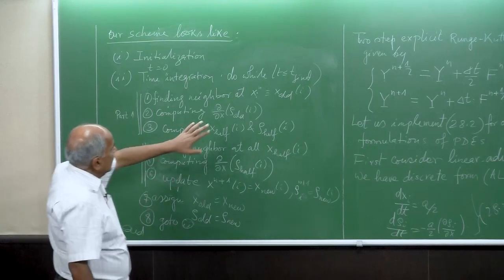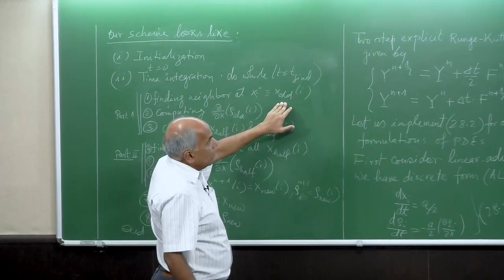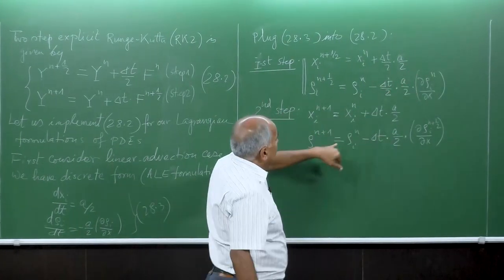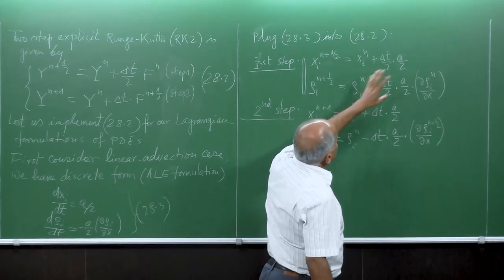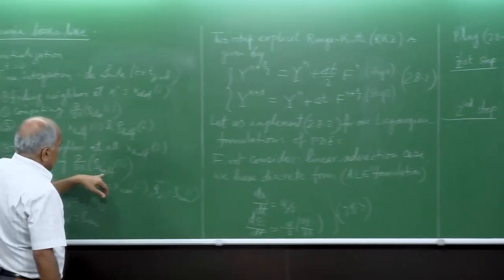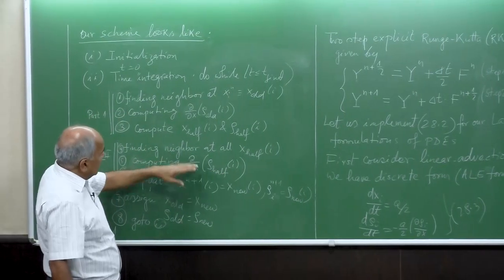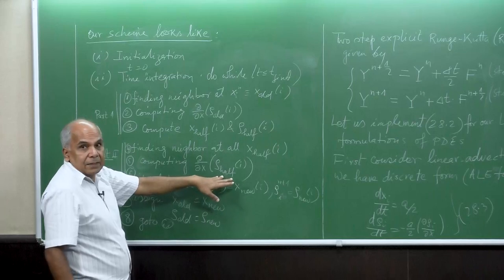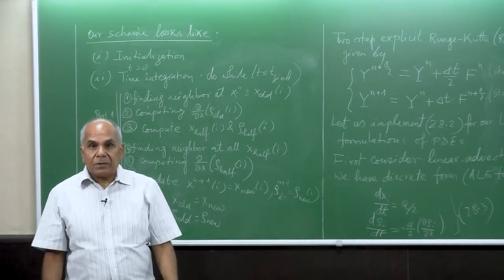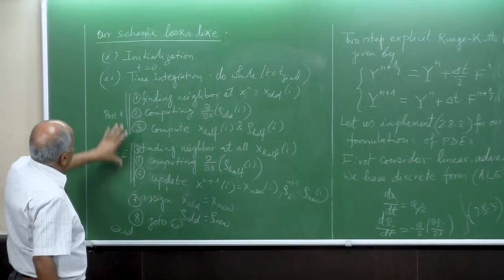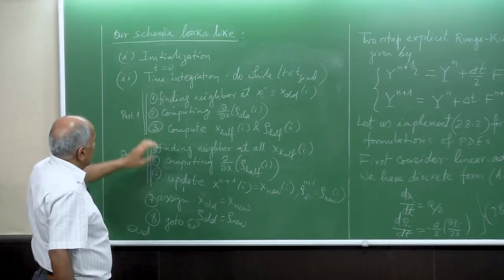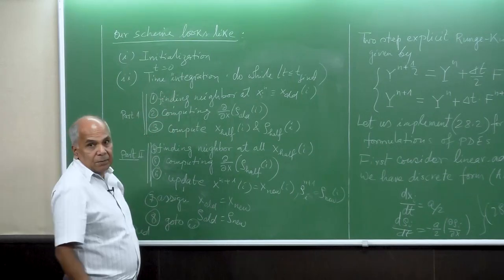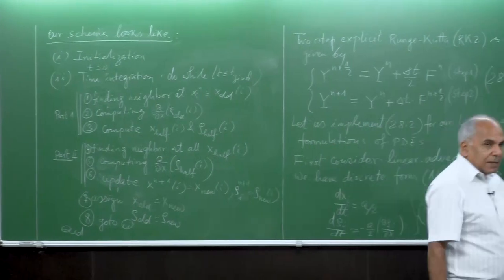So now what we have: find the neighbor at x_half, because we move after the half time step delta_t. Then again, if we have the new points in the second step, we have to compute the derivative. So we have almost double effort — to compute at every time step, you see we have two times we have to pay that price.